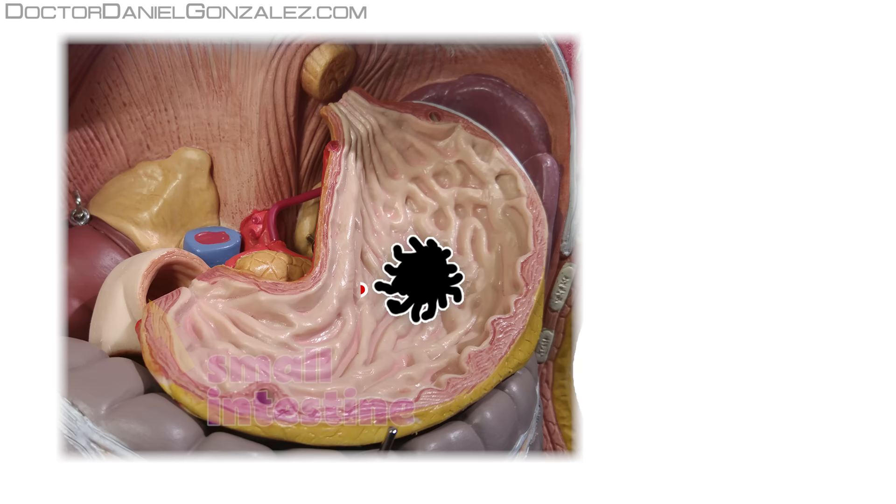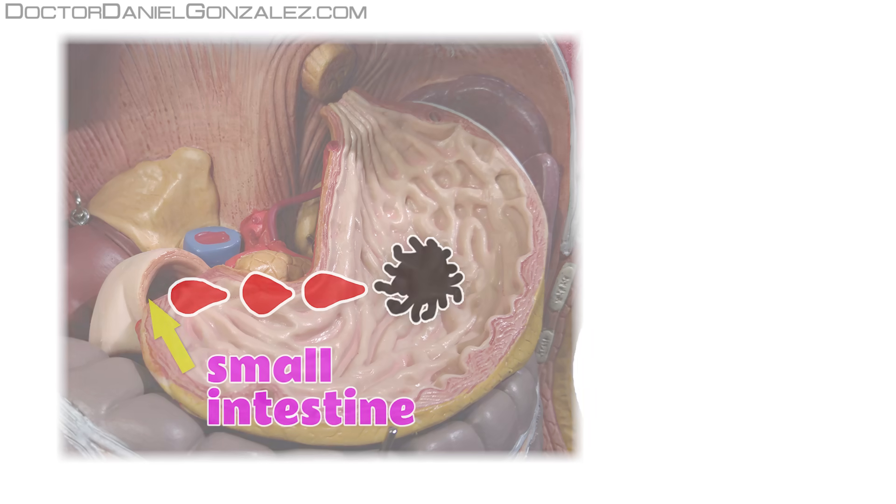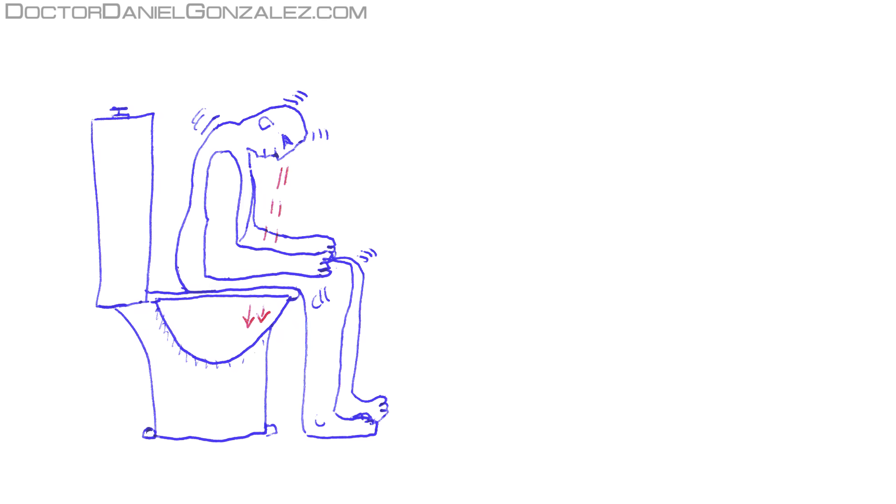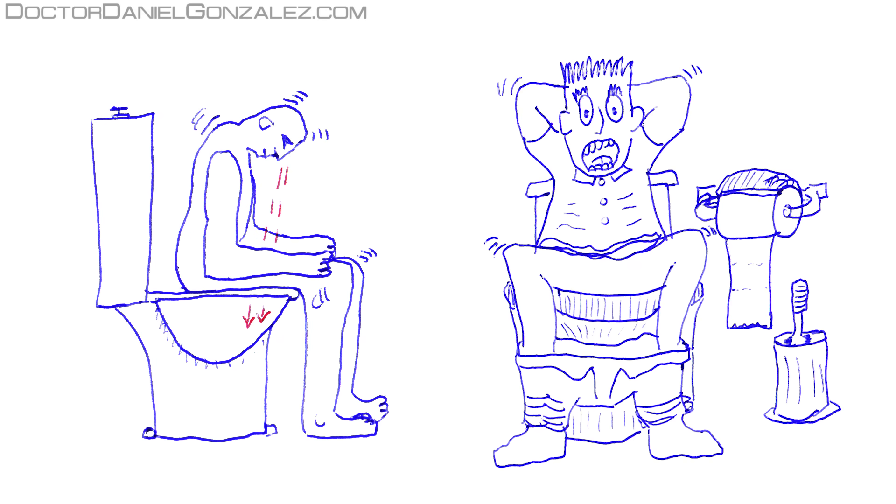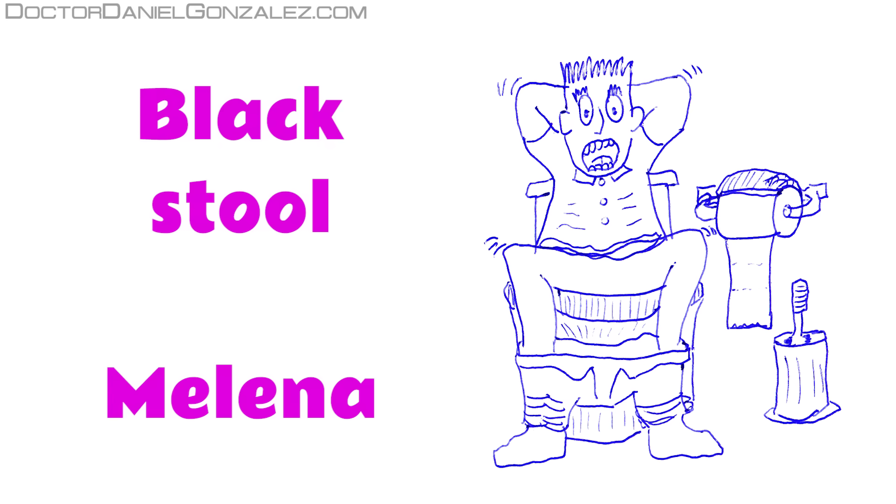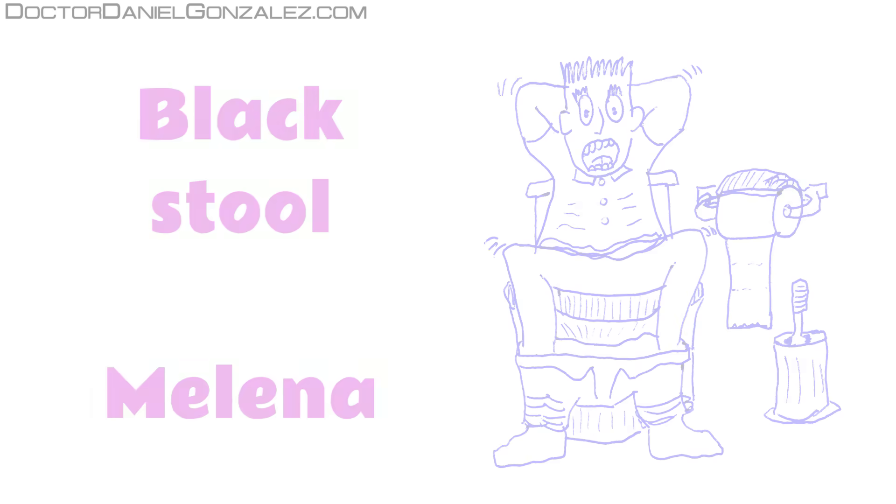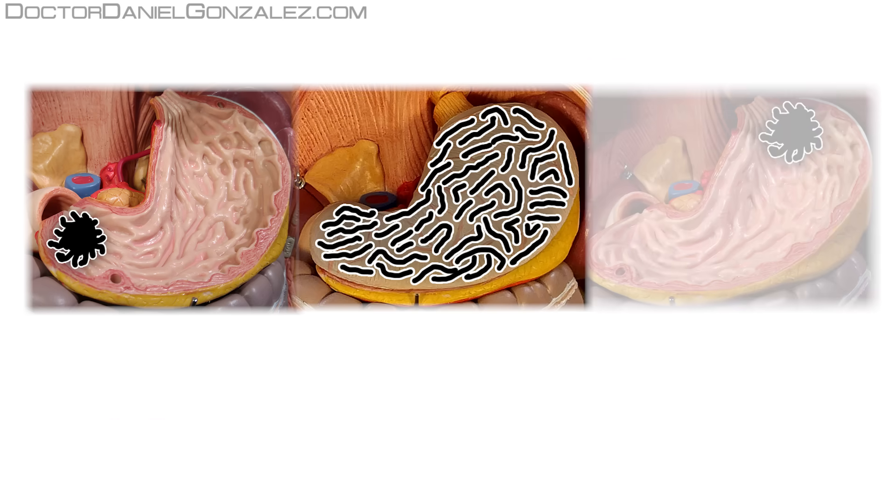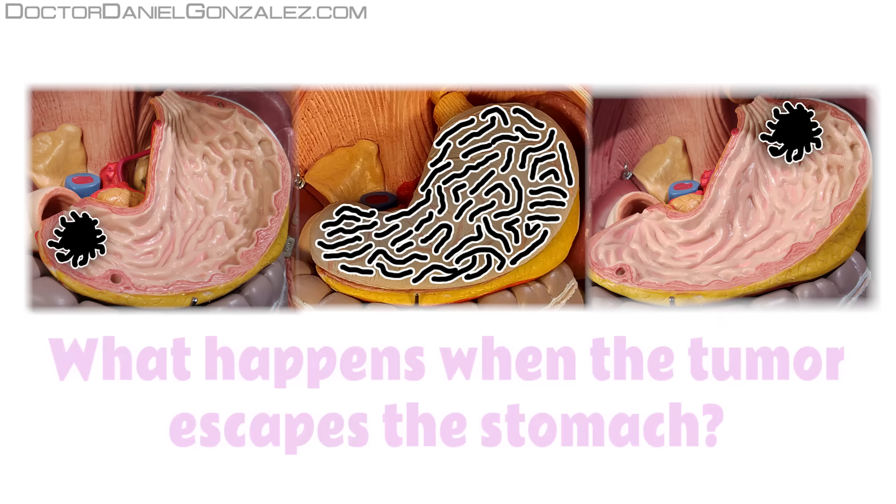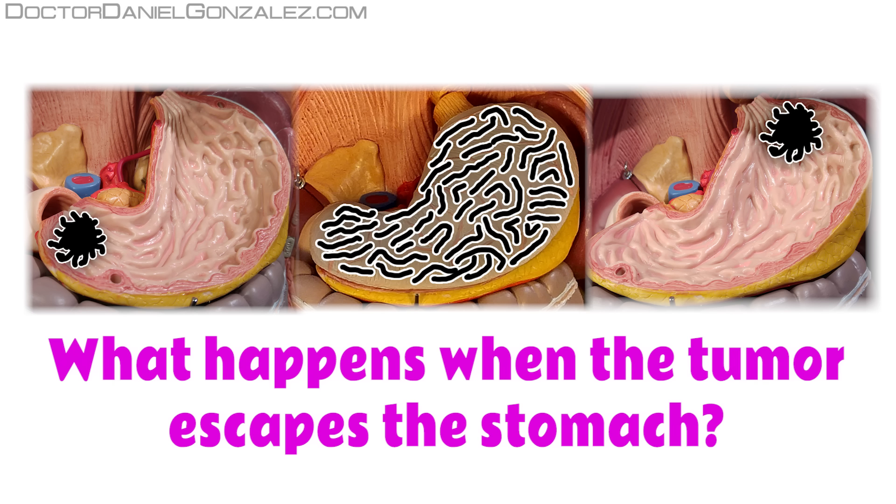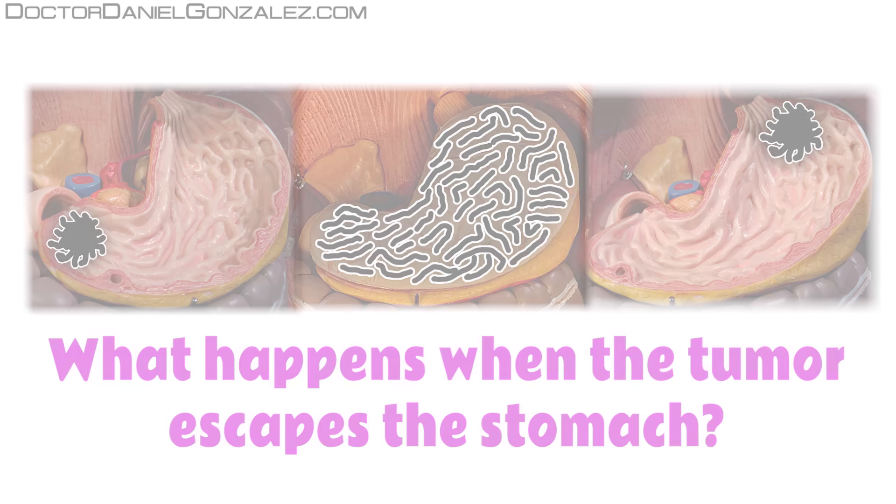If the elimination of that blood is done through the anus, the person who is bleeding from the stomach due to gastric cancer may see the stools are black. The black stools are called melena. We have seen the symptoms that can cause stomach cancer, but what happens when the tumor escapes the stomach?